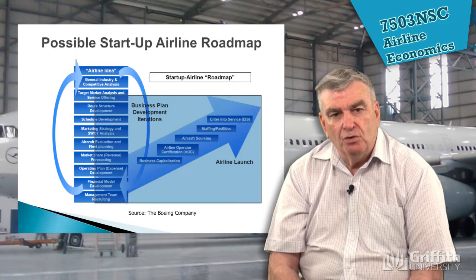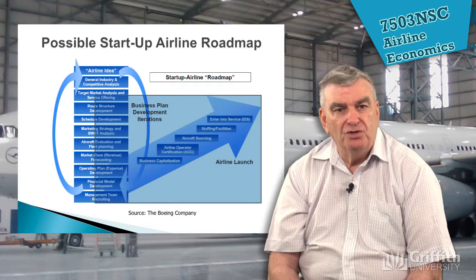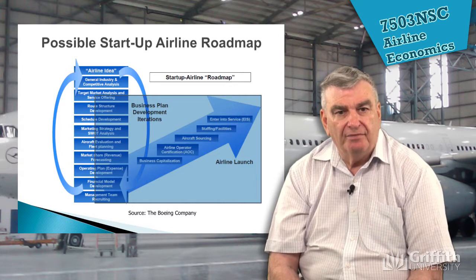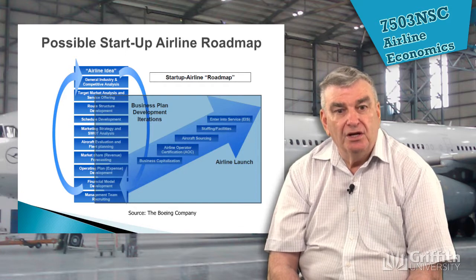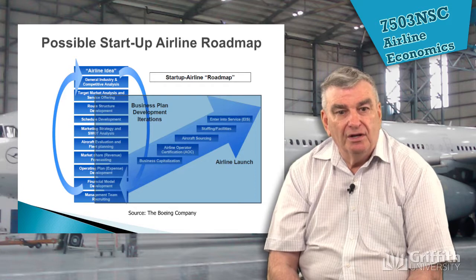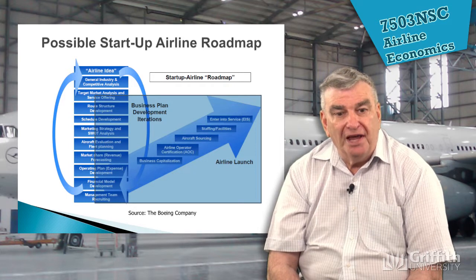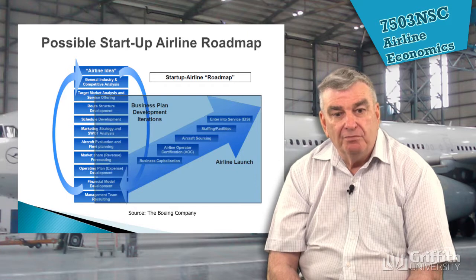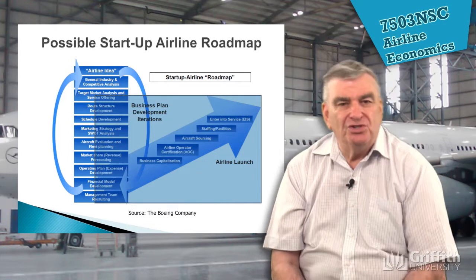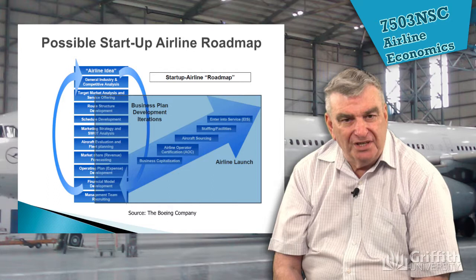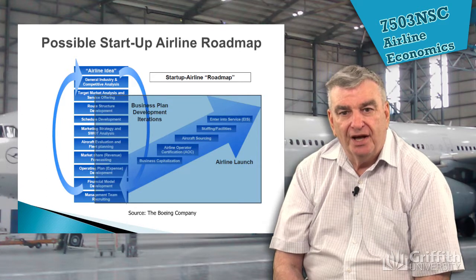Looking at the left-hand side of the model, we get the airline idea — the vision and the mission. That is, what do we want to be, and what are we going to be the day we start? There's the general industry and competitive analysis, the target market, the route structure, schedule development, marketing strategy, aircraft evaluation and fleet planning, operations plan, financial model, and the management team. All of this is what we've studied during the course — nothing has been wasted; every bit of it shows what's required as part of starting up an airline.